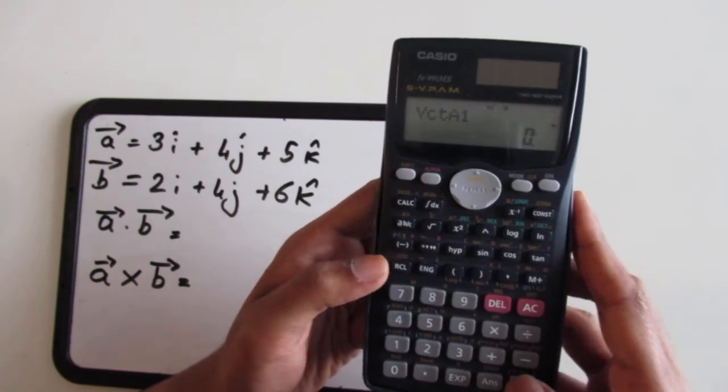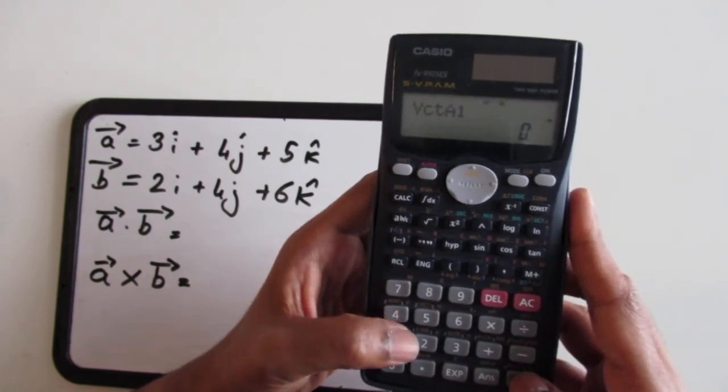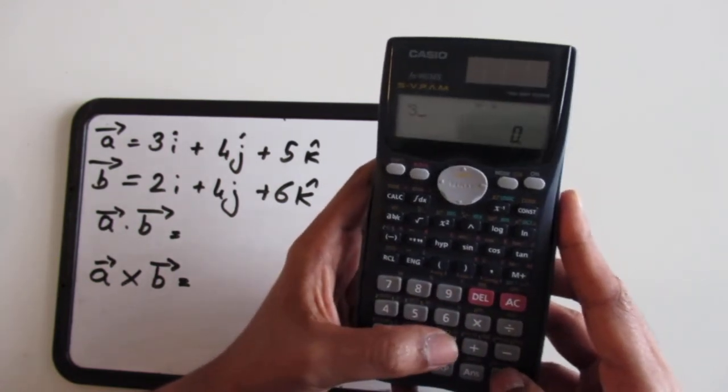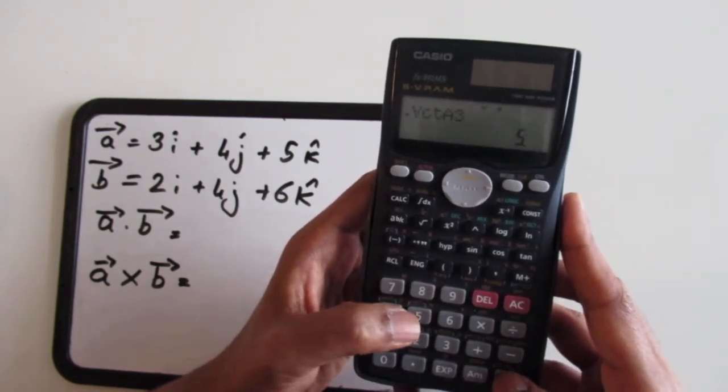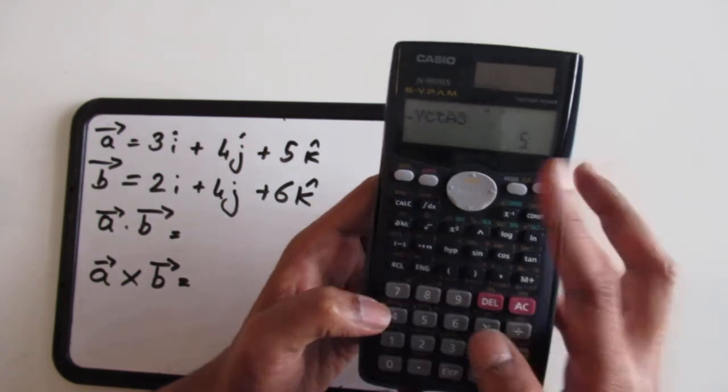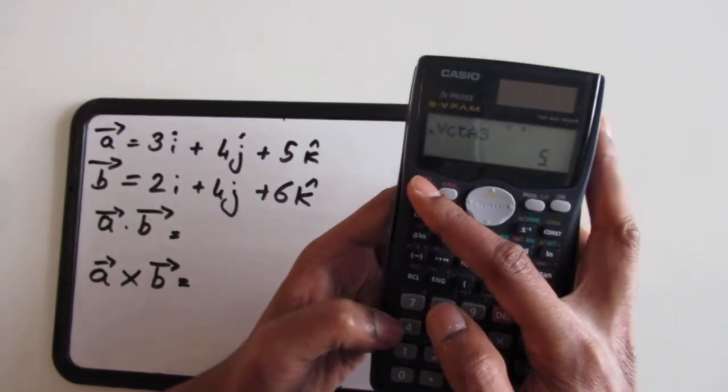Now it's going to ask me for the coefficients, so the first coefficient is 3, so it's 3i plus 4j plus 5k. Vector A is inputted. Now I'm going to input the values of vector B.